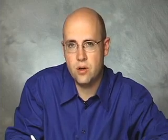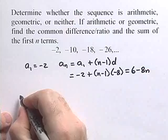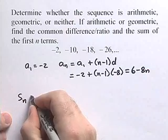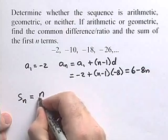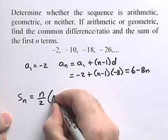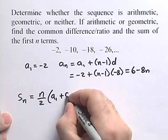Now that we have the first term and an expression for the nth term, we can use those to find a formula for the sum of the first n terms. Remember that for an arithmetic sequence, the sum of the first n terms is given by n divided by 2 times the sum of the first and nth terms.